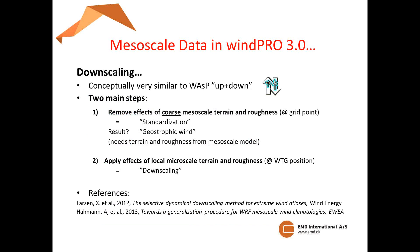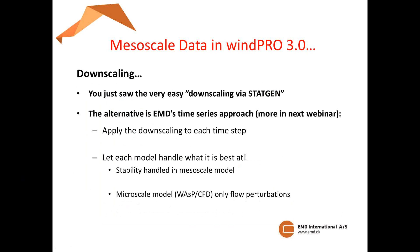Conceptually, downscaling is very similar to the WASP up and down, and that's why it's easy to do this easy downscaling via StatGen. There are two main steps. The first step is to remove the effects of the coarse mesoscale terrain and roughness at the grid point of interest. We call this step the standardization, and the result is a geostrophic wind or a wind statistics. It's very important to emphasize that for this step, you need the terrain and roughness from the mesoscale model. That's why we include it in the EMD mesoscale meteo objects. The second step is to apply the effects of the local microscale terrain and roughness valid for the wind turbine position — this is the actual downscaling part. This is well-established theory published in many different publications.